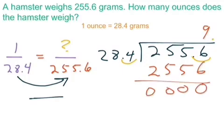So when we do this, you multiply it out, and the answer you would actually get would be nine. So this is how many ounces this hamster weighs. How many ounces does the hamster weigh? The hamster would weigh nine ounces.